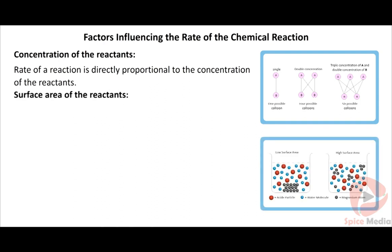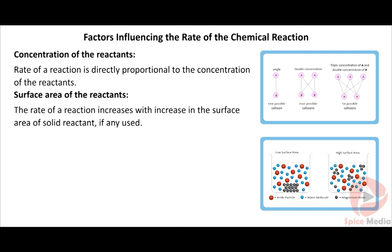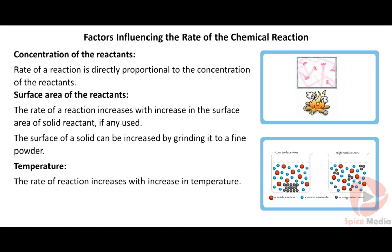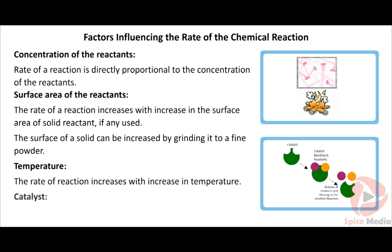Surface area of the reactants: The rate of reaction increases with increase in the surface area of a solid reactant, if any is used. The surface of a solid can be increased by grinding it to a fine powder. Temperature: The rate of reaction increases with increase in temperature. Catalyst: A catalyst increases the rate of reaction.